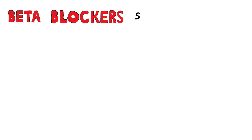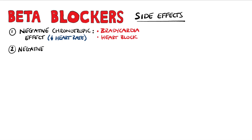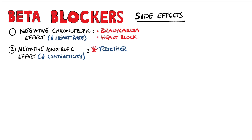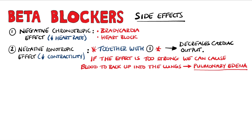Now let's look at some side effects of beta-blockers. Due to the negative chronotropic effect, we can get bradycardia and even heart block, which is why they are often contraindicated in people with heart block. Due to the decrease in contractility and heart rate, they can cause cardiac output to drop so much that circulation backs up into the lungs, causing pulmonary edema. For this reason, beta-blockers need to be used slowly and carefully, and it's crucial to monitor for signs of pulmonary edema.